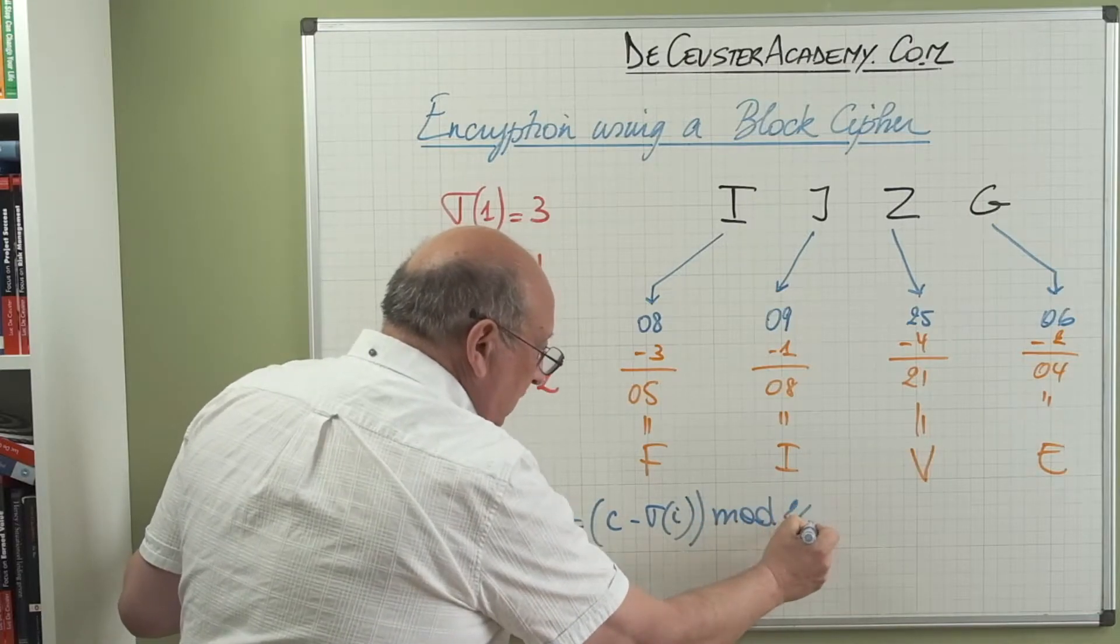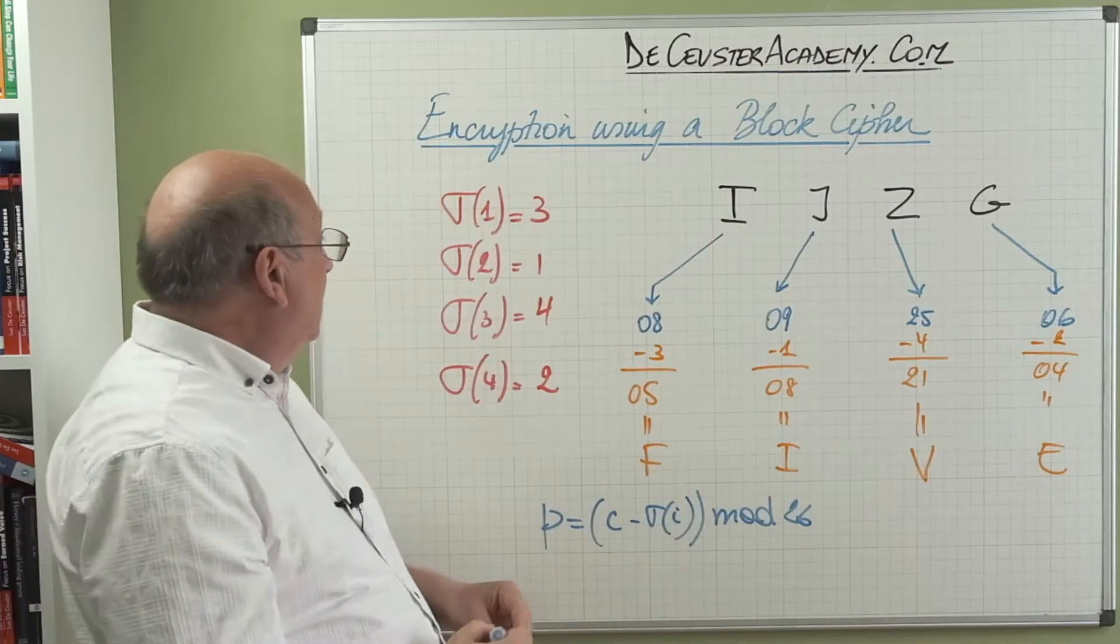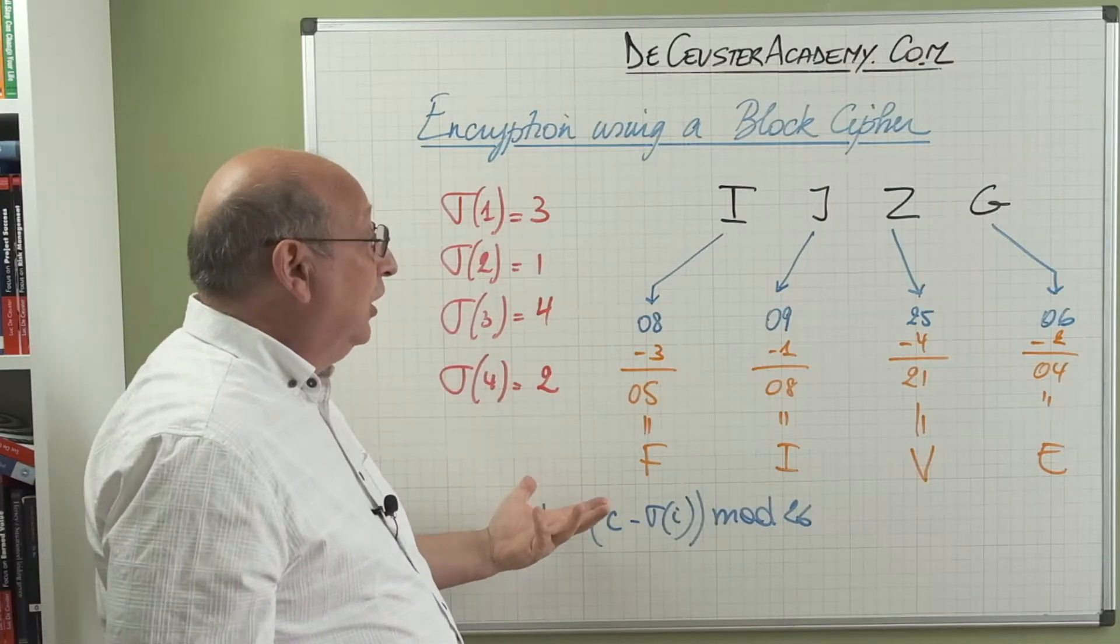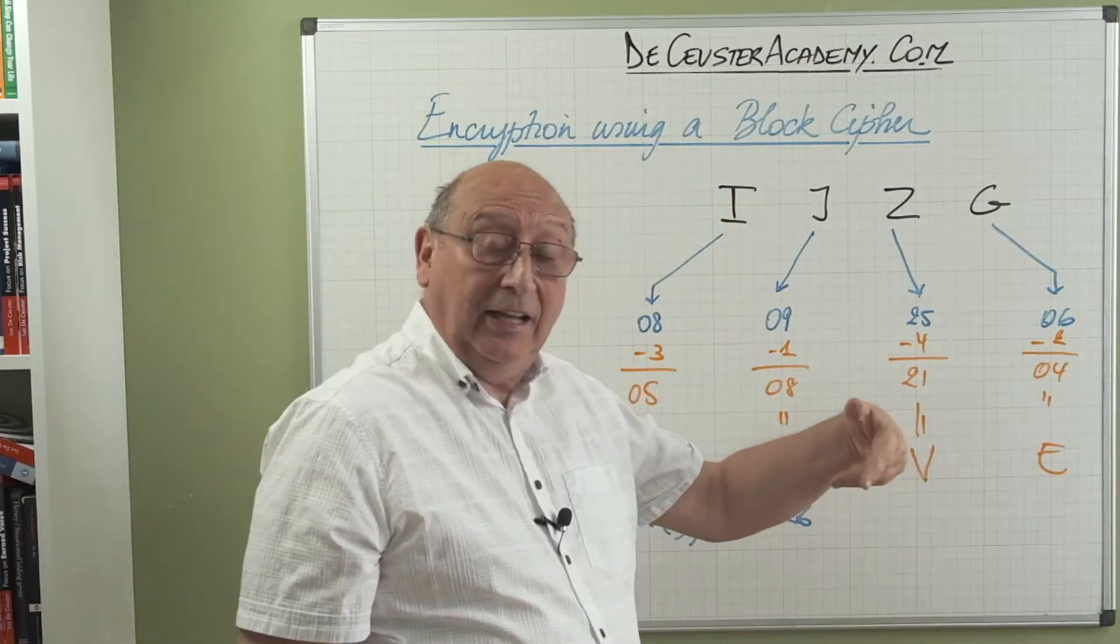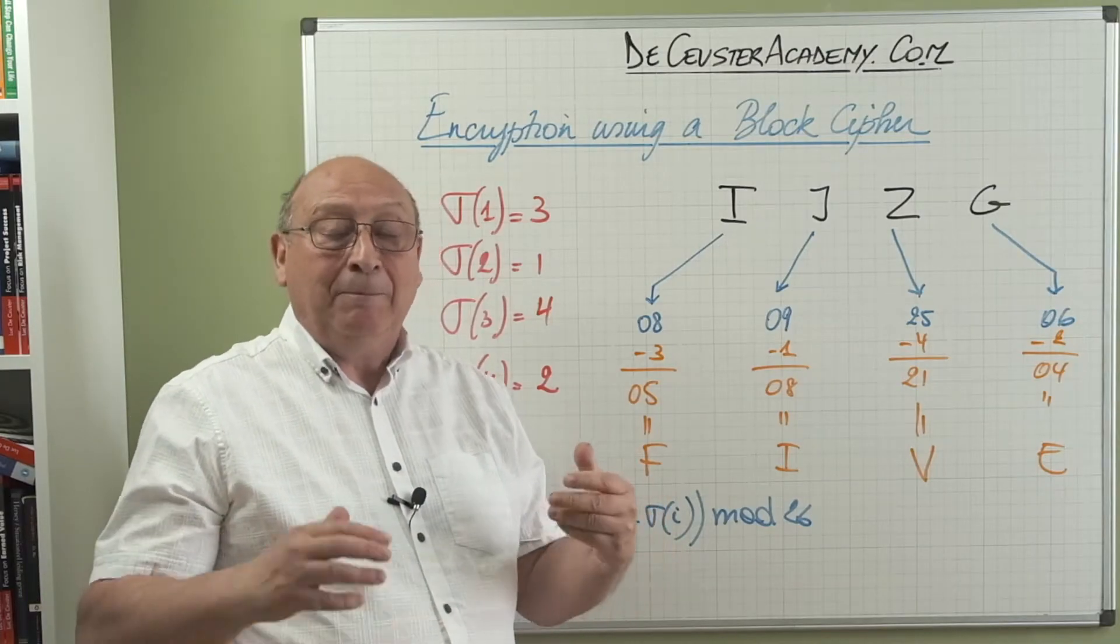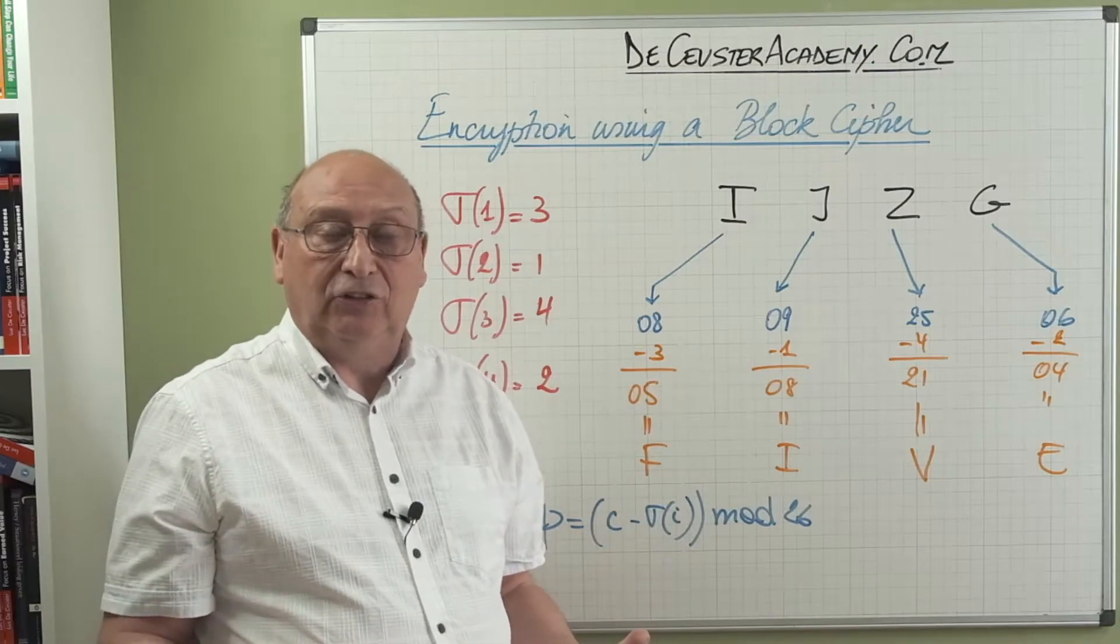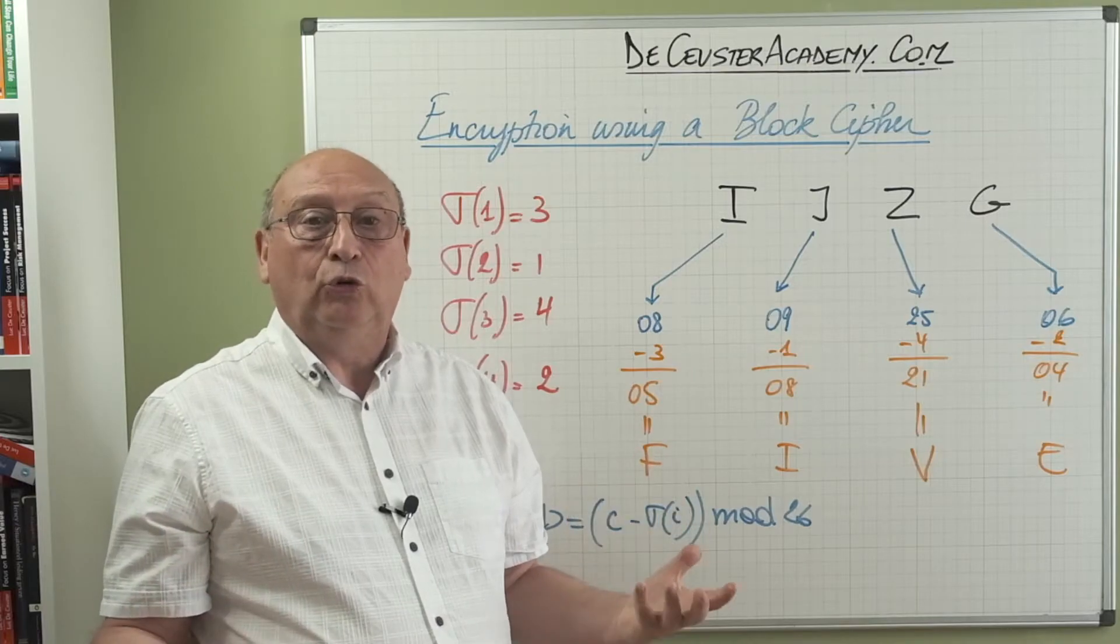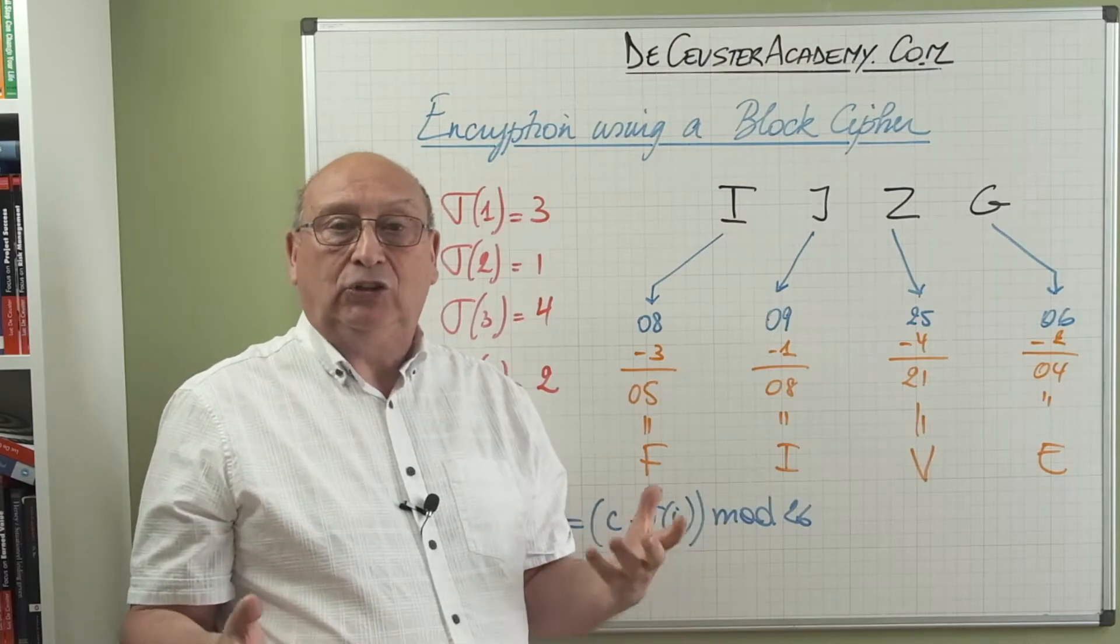So first, second, third, fourth, and then we start from one, two, three, four again. So we always look at blocks of four, and every element of the block has a different value or a different element number to add. Let's have a look at a few exercises to show you how this block cipher works on other examples.